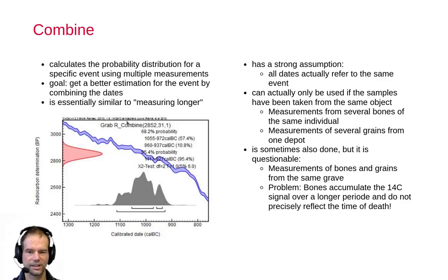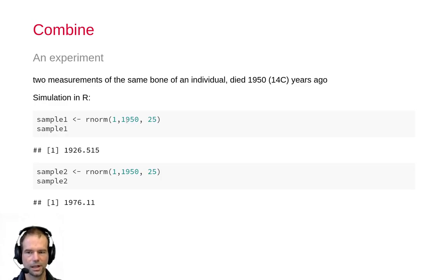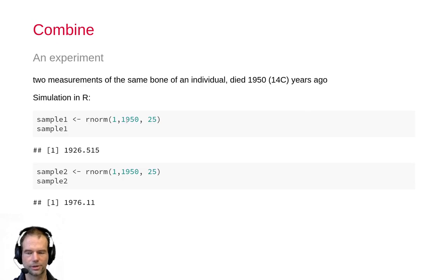Combining is a very easy way to improve the precision of C14 dating using multiple measurements, so it has clear benefits when you can make sure you are really combining dates from the same event. I will give you some small experiments showing how you can do that. I use some R code here to show you the structure behind it, though you do not necessarily have to do this in R — the method to use is OxCal.